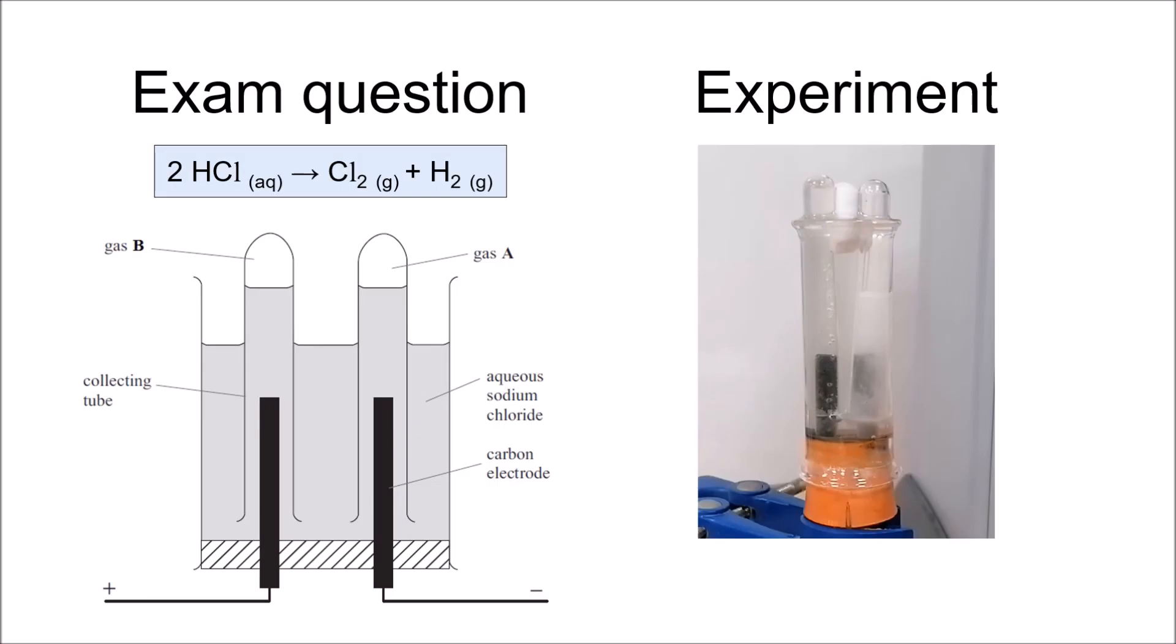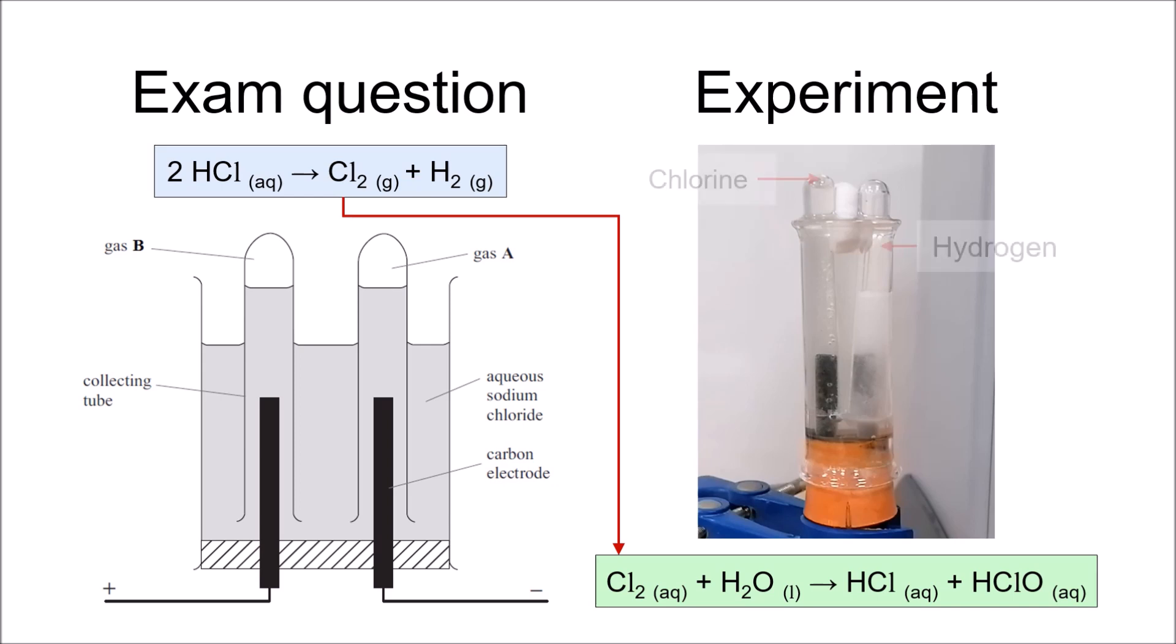In the exam questions, they will show equal volumes of both gases being produced, as does the equation. However, these guys don't live in the real world. You see, chlorine undergoes a disproportionation reaction in water. You have that to look forward to in A-level chemistry. Both of the products it gives are soluble. Therefore, a smaller volume of chlorine is observed being given off at the anode.